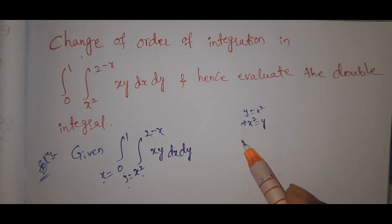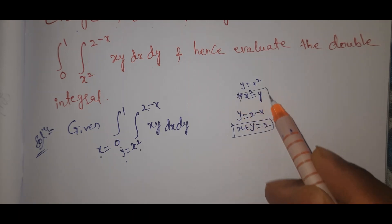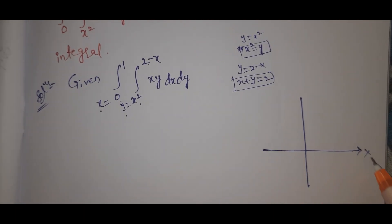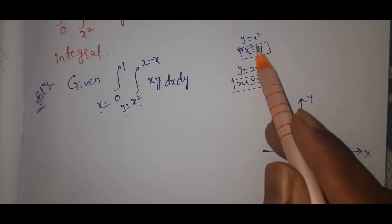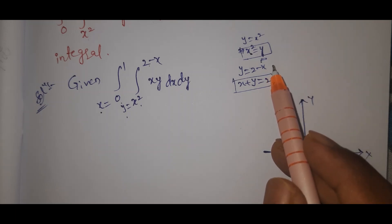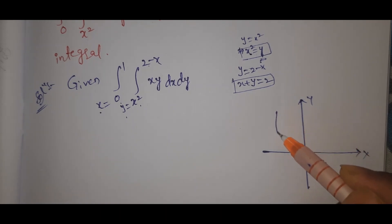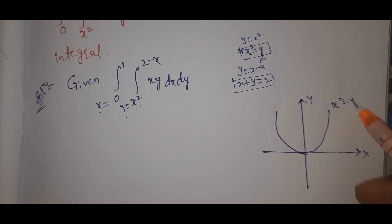Next, the upper limit of y is 2 minus x, which gives us x plus y equals 2. Now let's draw this region. The curve x² = y is a parabola.